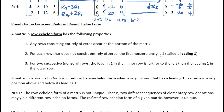For two successive non-zero rows, the leading one in the higher row is further to the left than the leading one in the lower row. The goal here with a matrix is to get ones along the diagonal. Row echelon form means you have your ones like this and zeros below them.